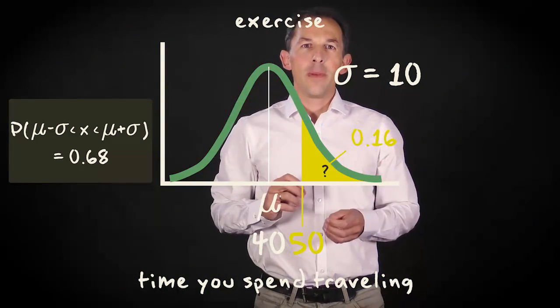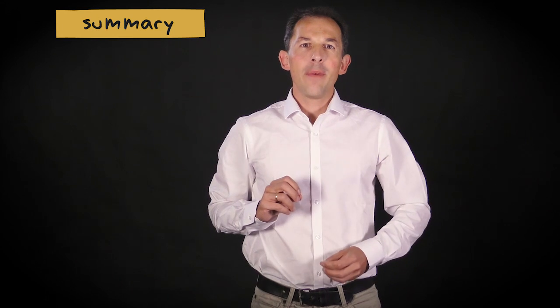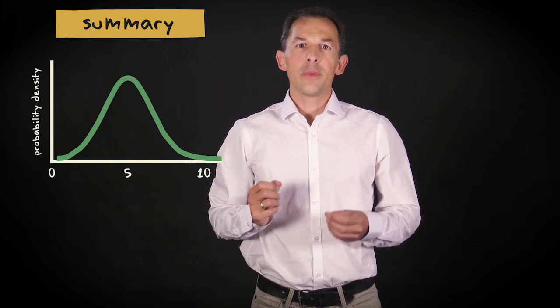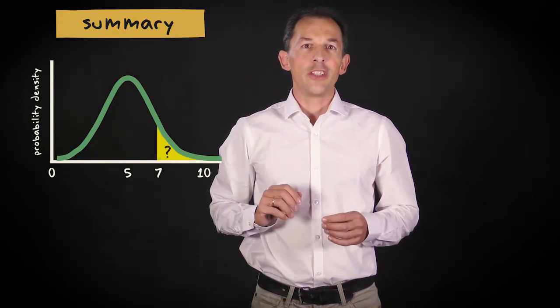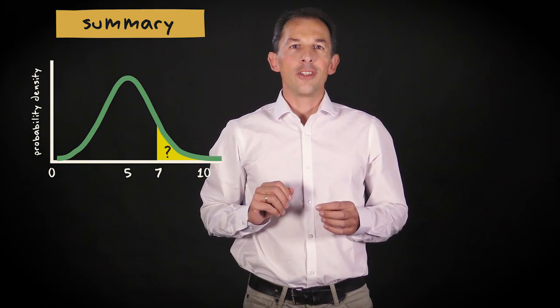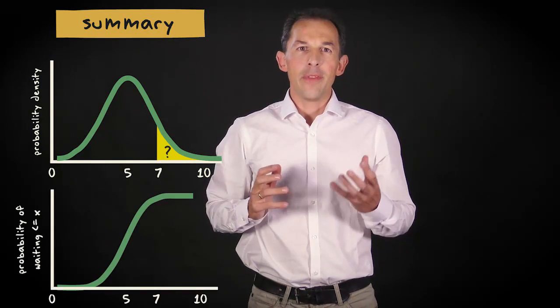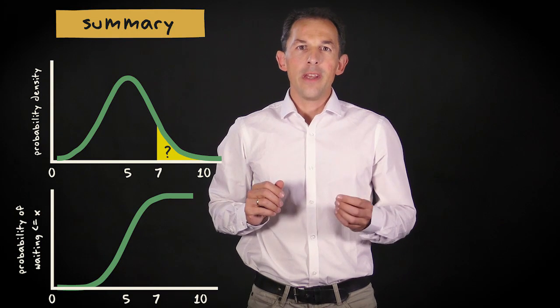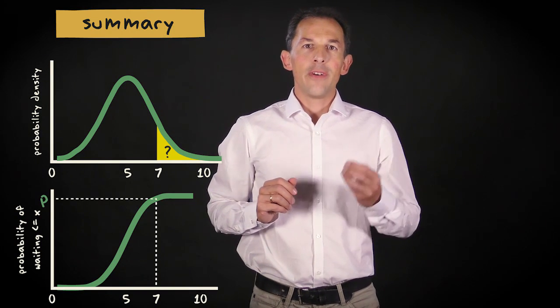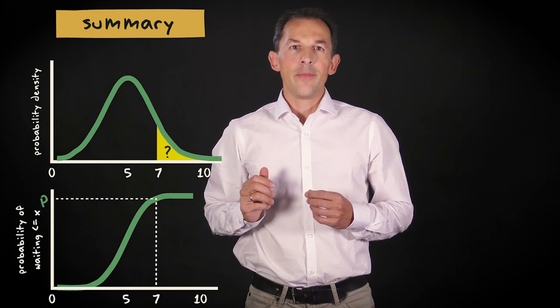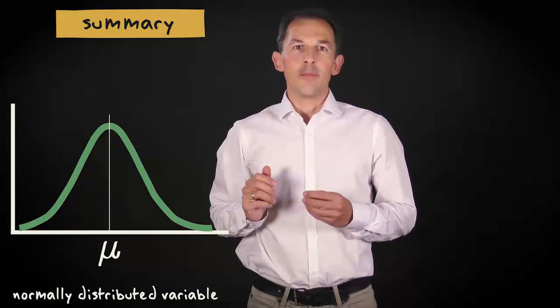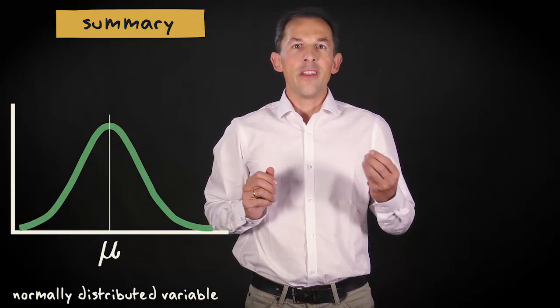Let me summarize what I explained in this video. On the basis of a probability density function, you can calculate the probability that the random variable falls within a given range by estimating the area under a curve for that range. With the cumulative probability function, you can do the same, but then more accurately, by reading the probability for the relevant values from the y-axis. For a normally distributed variable, there is a fixed relation between the probability and an interval around the mean.